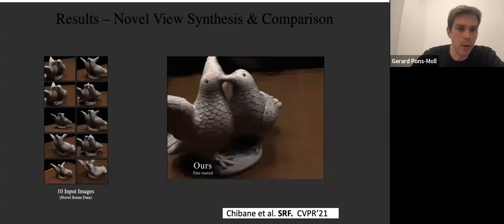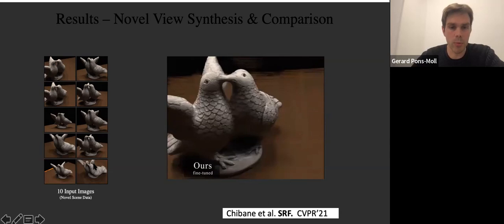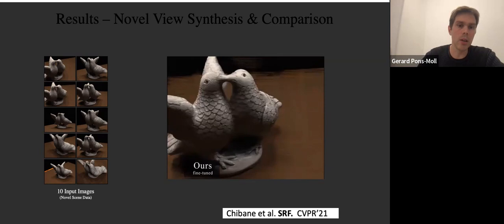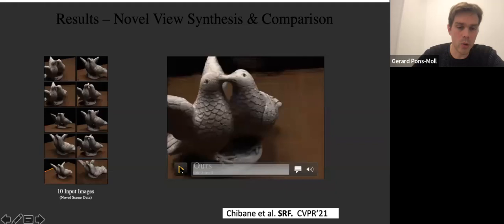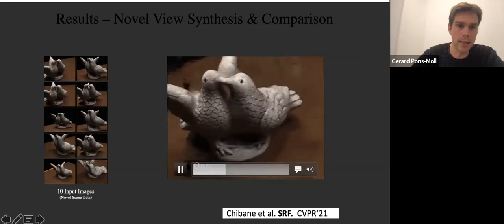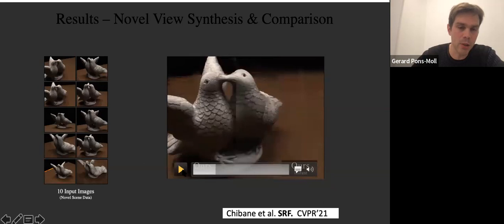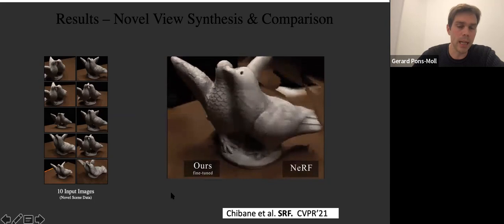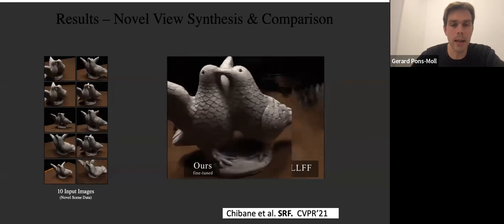Here we have 10 input images of a novel scene — not a scene seen during training. We have two modes of operation: the first is the instant result, where we just push the images through the neural network immediately. The other is a fine-tuned result, where we use these 10 images to fine-tune the representation. The fine-tuned result on the left is a bit better, but the instant result is also quite good already. This shows the generalization ability obtained by using this architecture inspired by multi-view stereo.